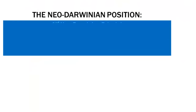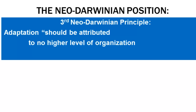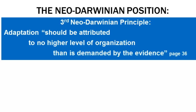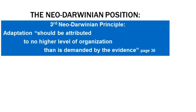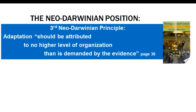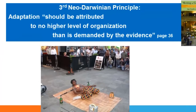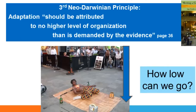The third neo-Darwinian principle is that adaptation should be attributed to no higher level of organization than is demanded by the evidence — a quote from Meeting at Grand Central, page 36, from George Williams, who helped formulate the neo-Darwinian principle. This raises the question: if we're trying to go as low as possible in the hierarchy of life, just how low can we go? Can we go below the individual?